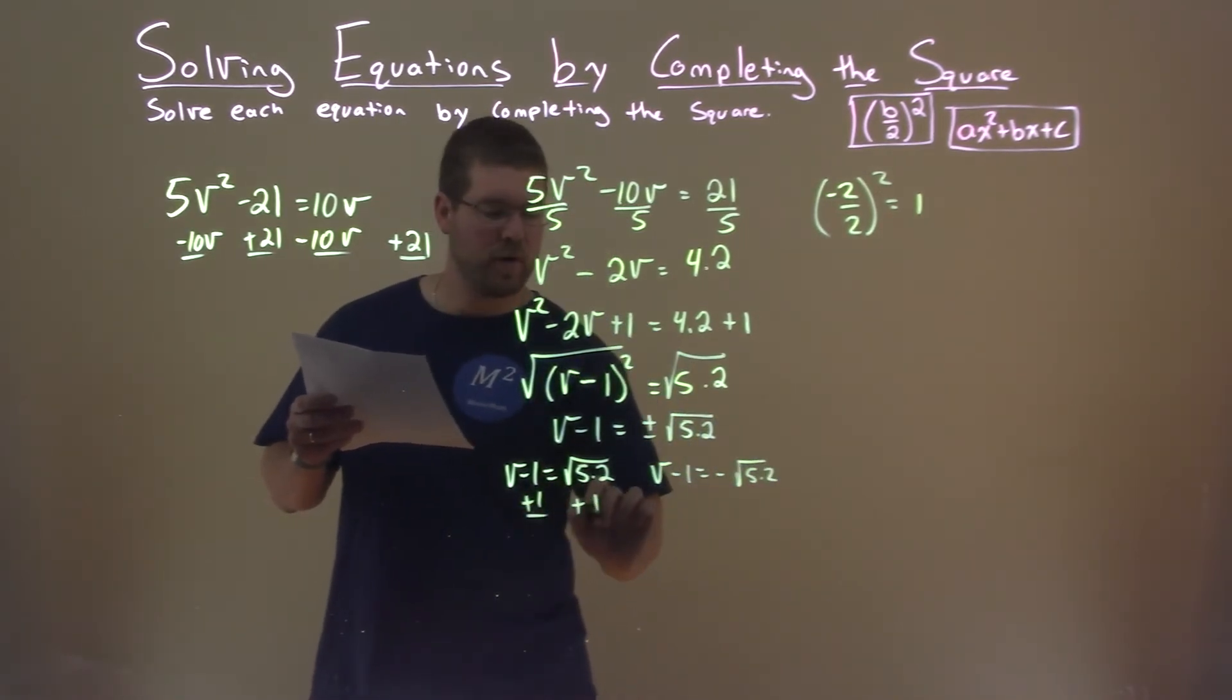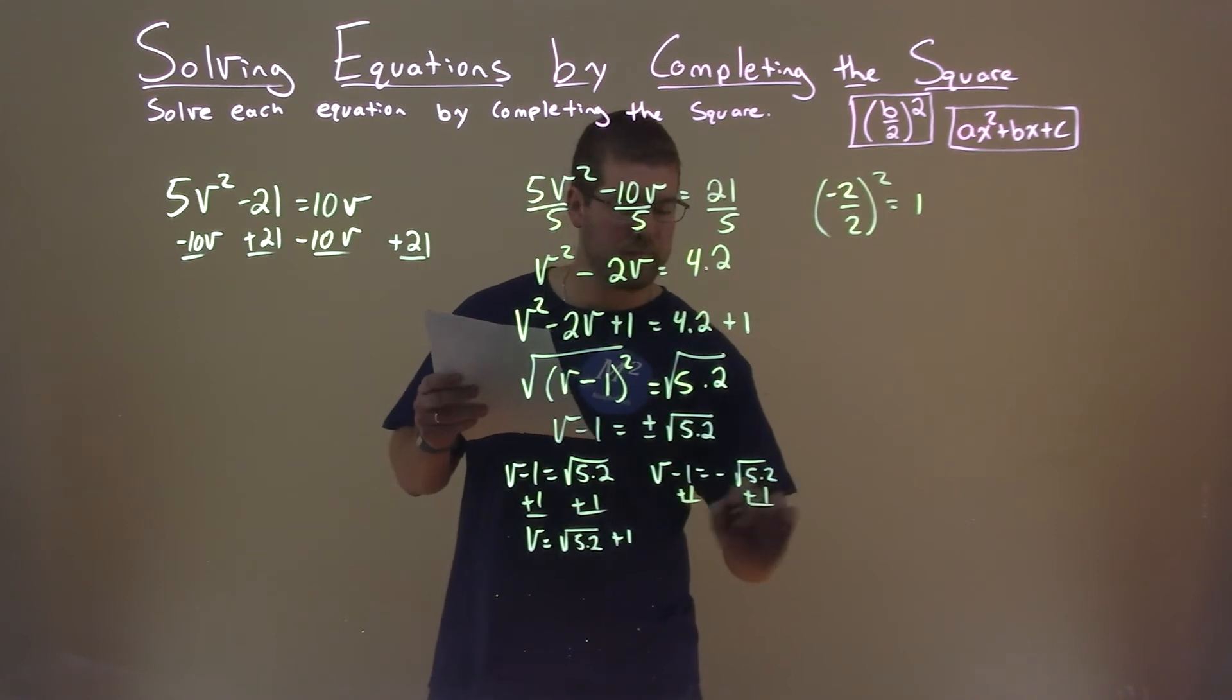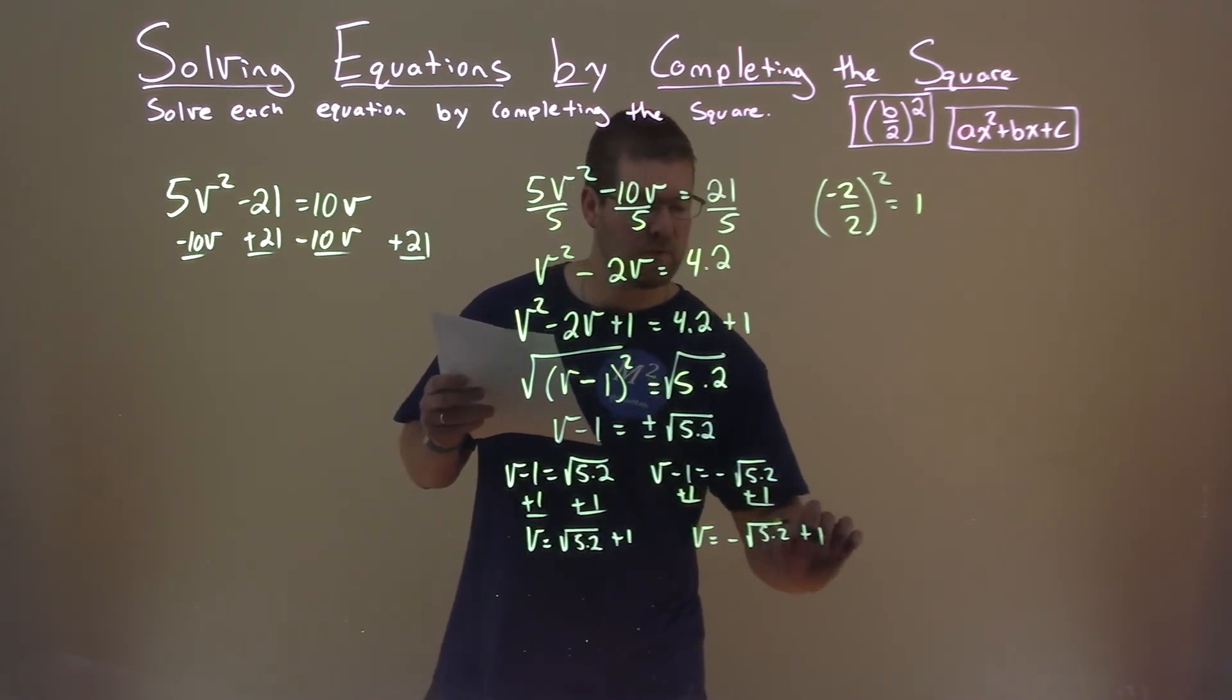Add 1 to both parts. v equals square root of 5.2 plus 1. Again, do the same thing, v equals a negative square root of 5.2 plus 1.